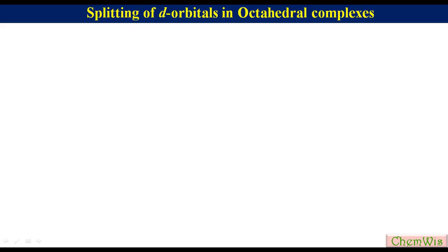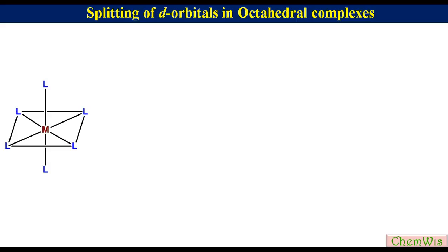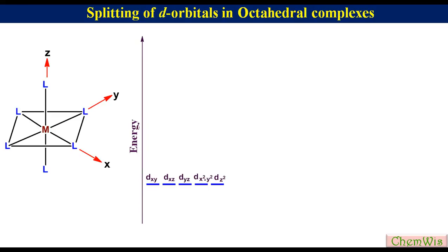Splitting of d-orbitals in octahedral complex. The general structure of an octahedral metal complex can be represented by this formula. These are the three axes x, y and z. When the metal is free, all the five d-orbitals have the same energy and are termed as degenerate.